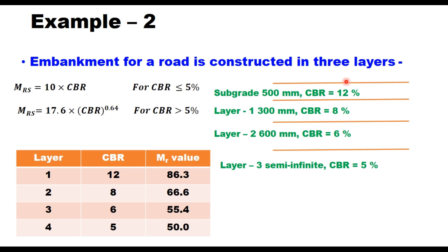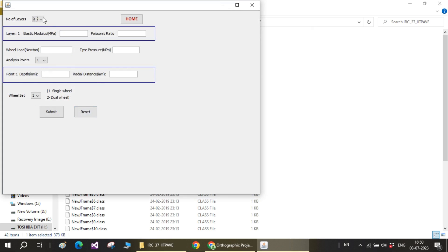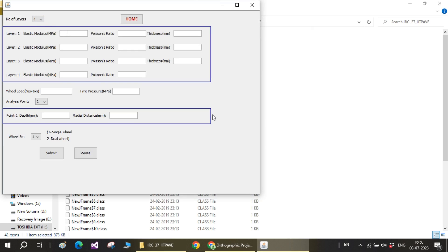So here we go to the IIT PAVE software to get this surface deflection value. So you again start the file. IIT PAVE start, design a new pavement section. This time you have four layers. So put the values of each layer's elastic modulus, Poisson ratio and thickness. Layer 1 is 86.7. Poisson ratio is 0.35. That will be same for all layers. Thickness of the top layer is 500 mm. Next layer 66.6, and similarly you feed all these values for each layer. So these are the values we have fed now in the software: elastic modulus, Poisson ratio and thicknesses.